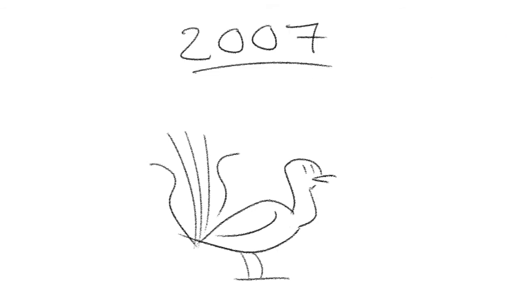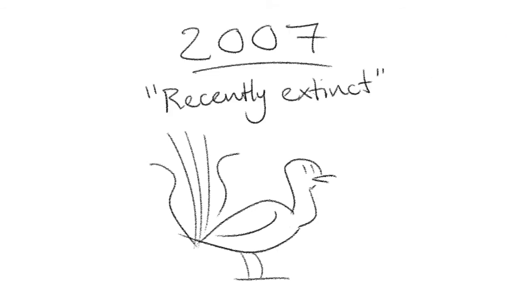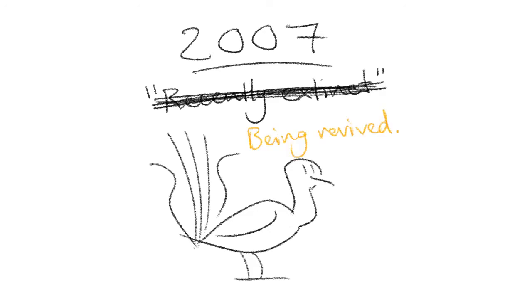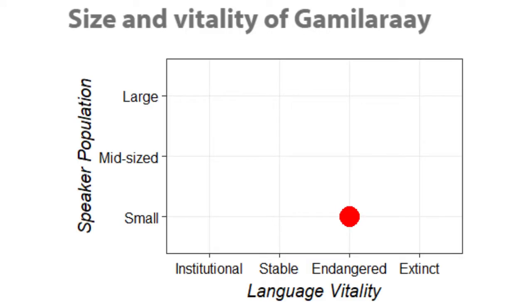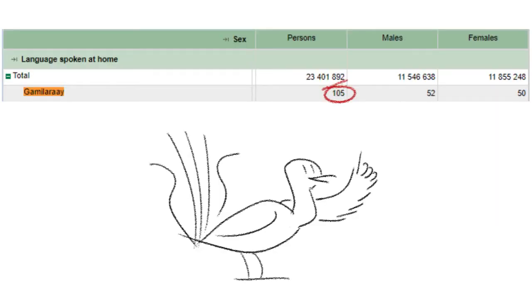As of 2007 the language was classified as recently extinct, but it is currently in the process of a revival — and there was much rejoicing. Ethnologue currently classifies the language as endangered, and according to a 2016 census, 105 people claim to speak Gamilarai at home.